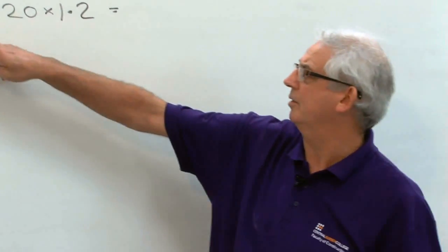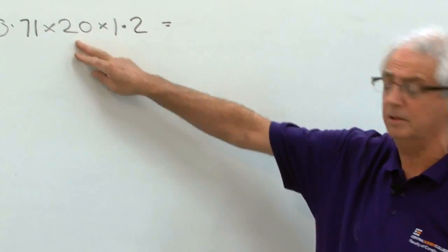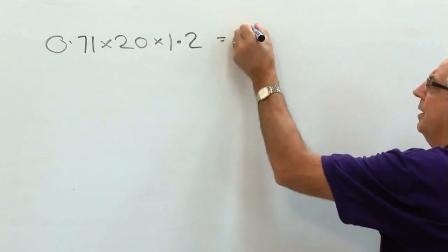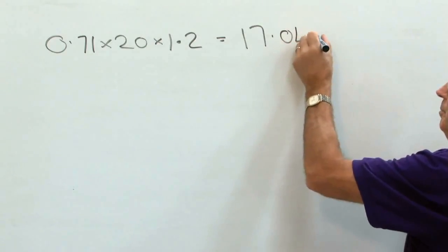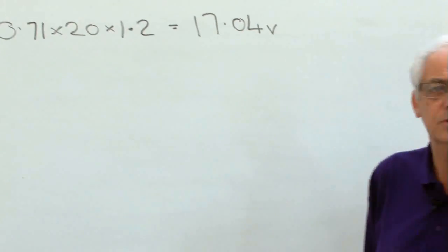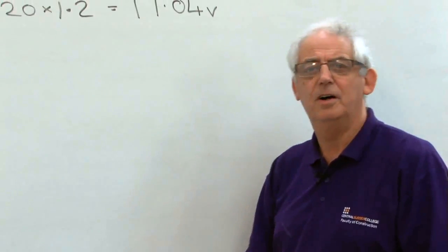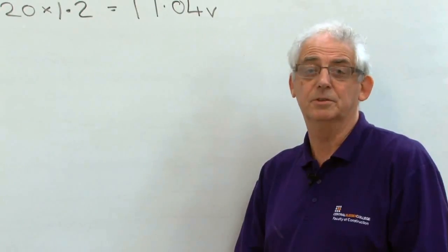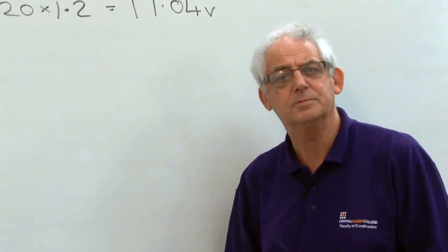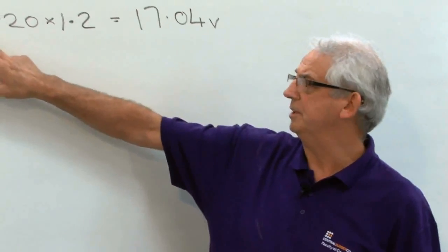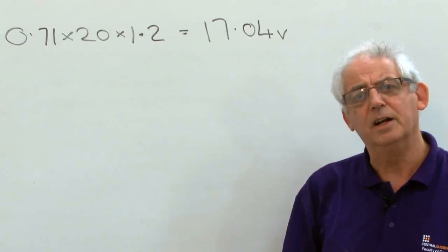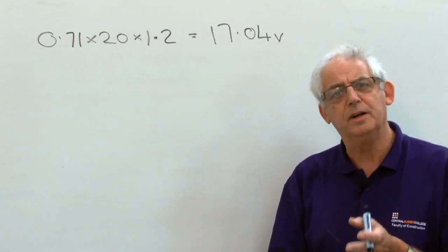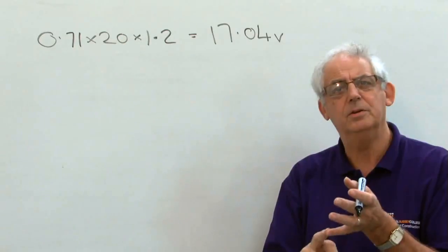Now if I multiply all three together, I've got the resistance times the current which is really just Ohm's law, multiply it by 1.2, I'm going to end up with a value of 7.04 volts. Now clearly that's far greater than the 5% I would be allowed for this circuit, 5% of 230 is 11.5 volts. But of course what I'm using here is a resistance value of a 4mm and a 1.5. To get the true value I need to use 4mm and 4mm.